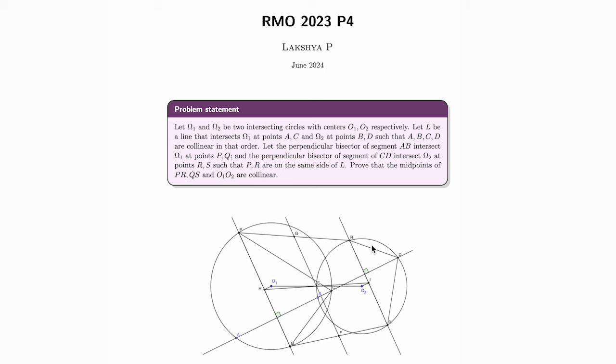But we are not complete yet. It is still to be proven that HE is equal to IE and that H, E, and I are collinear, because E here is the midpoint of O1O2.